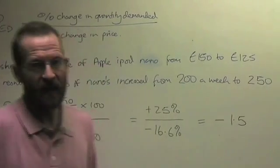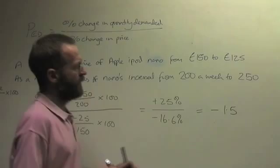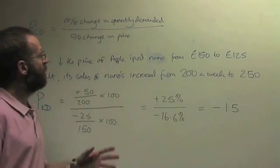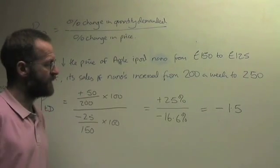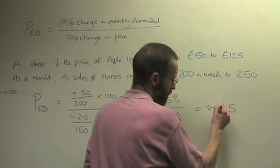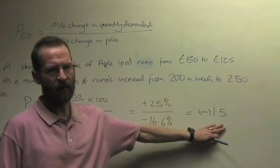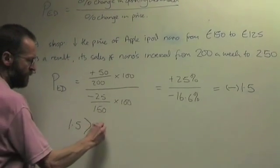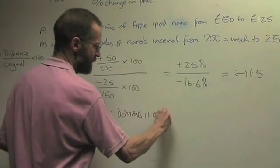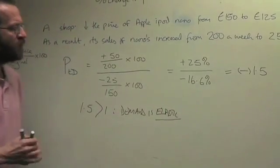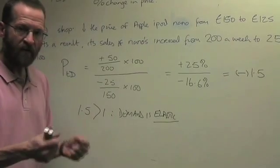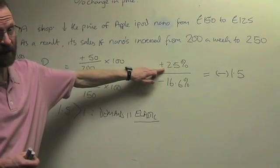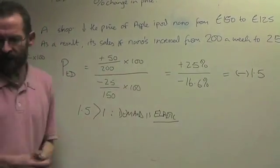You need to comment on the size and the sign. The first thing to do is to comment on the sign. For price elasticity of demand, the sign is always negative. As the price goes up, the quantity of demand goes down. So for price elasticity of demand, and only price elasticity of demand, you ignore the minus sign. So what we're left with then is a number 1.5. 1.5, we have to compare it to 1. It's greater than 1. So we say that demand is elastic.